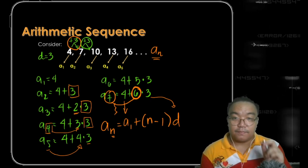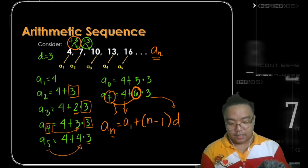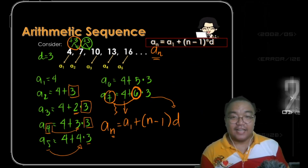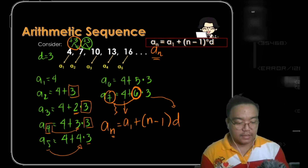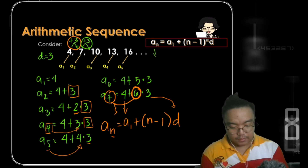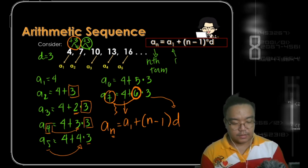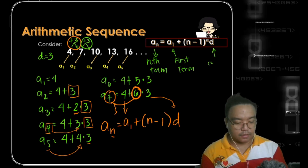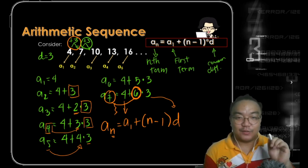The general rule for arithmetic sequences is: a sub n equals a sub 1 plus (n minus 1) times d, where a sub n is the nth term, a sub 1 is the first term, and d is the common difference. Let's have examples on how to use this formula.